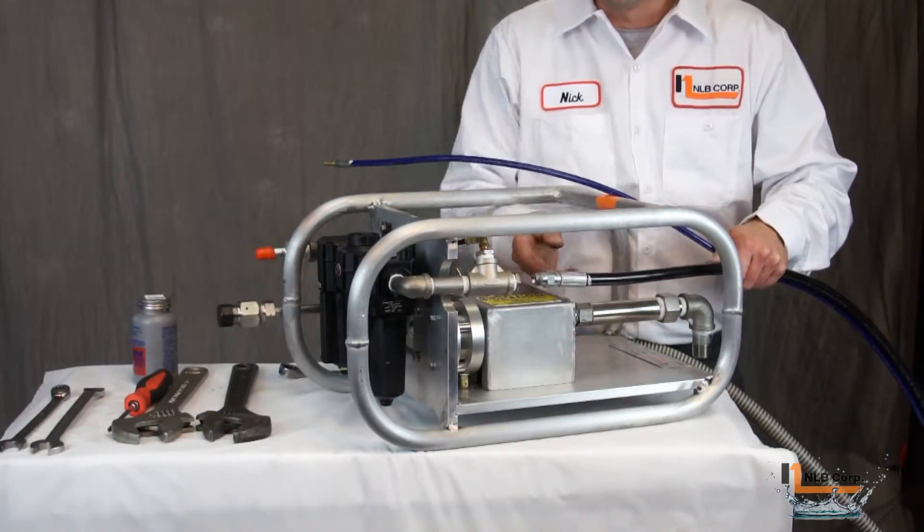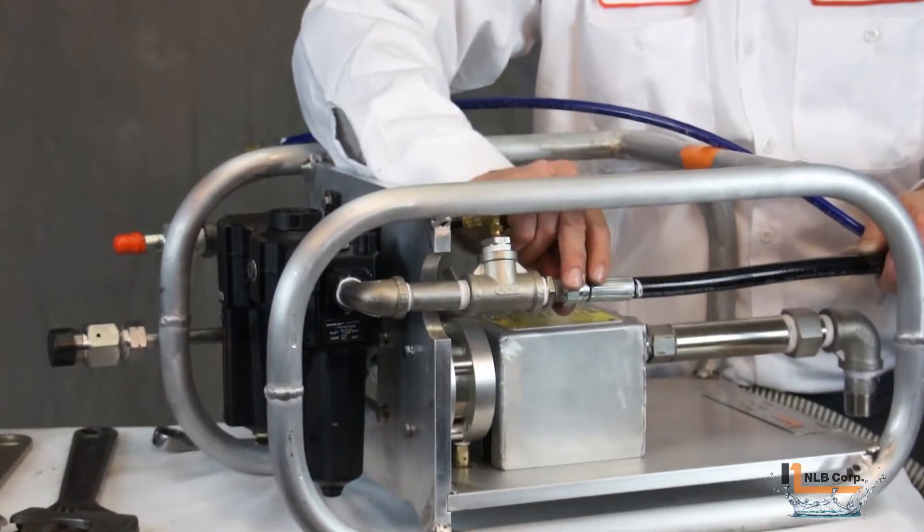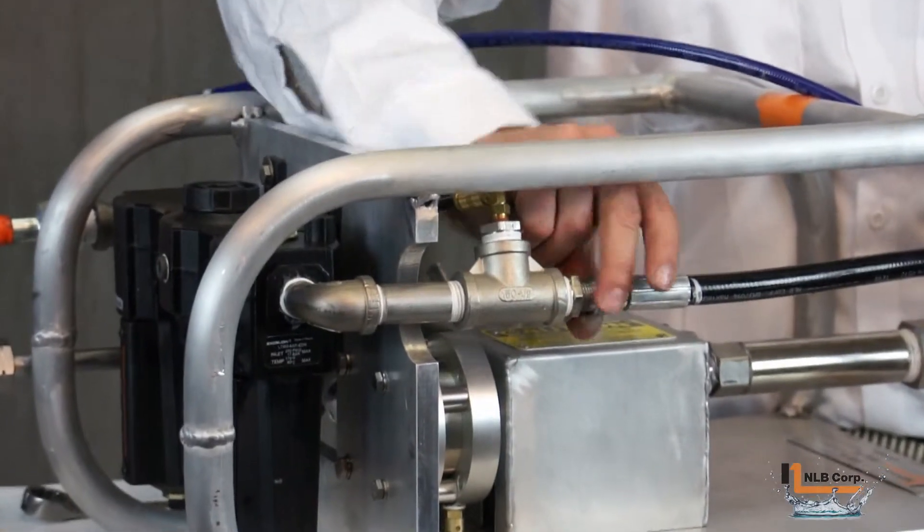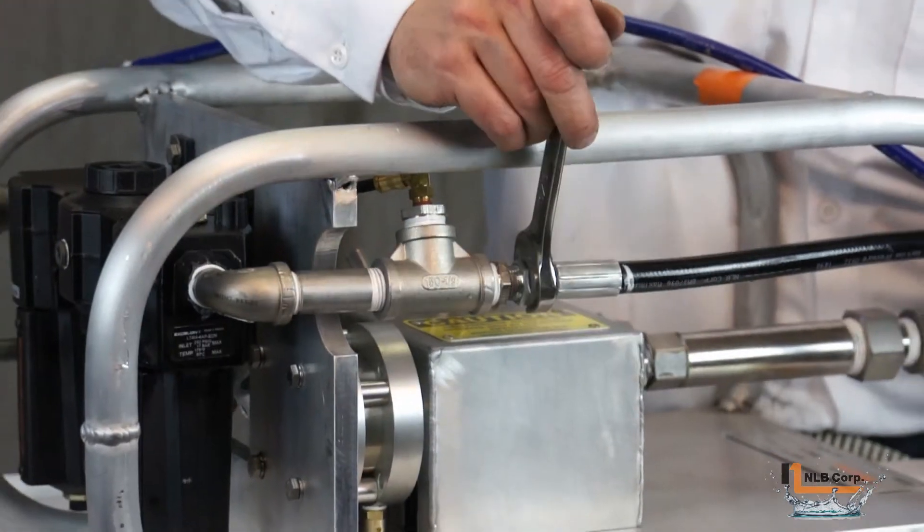Next, we'll attach the opposite end of the DM14150 hose assembly to the bi-mode valve. First, we'll connect the black air supply line to the bi-mode, loosely tighten it with your fingers and then use a wrench.